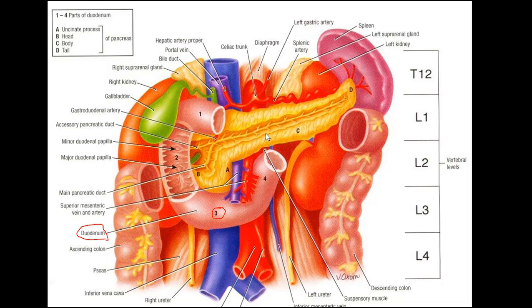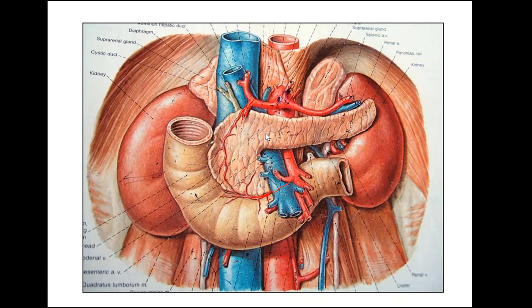Now let's talk about the blood supply of the duodenum. It is supplied by two major arteries: the superior pancreaticoduodenal artery, which takes origin from the gastroduodenal artery, and the inferior pancreaticoduodenal artery, which takes origin from the superior mesenteric artery.